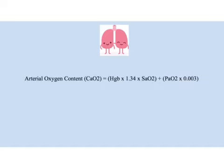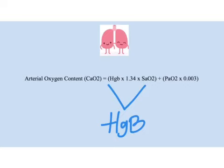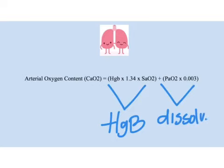Let's start with the lung component of the equation, or arterial oxygen content. This has two primary components: first, the amount of oxygen bound by hemoglobin, and second, the amount of oxygen dissolved in blood. Let's look at these two a bit further.